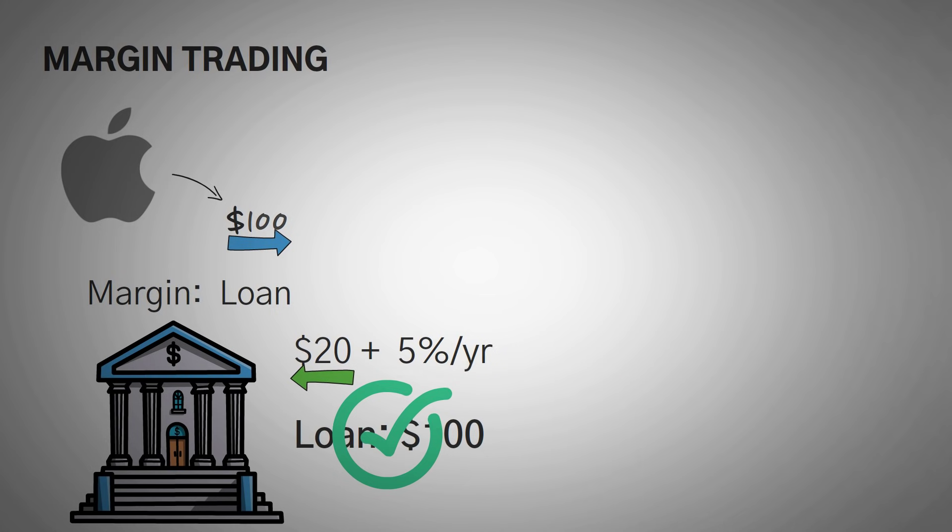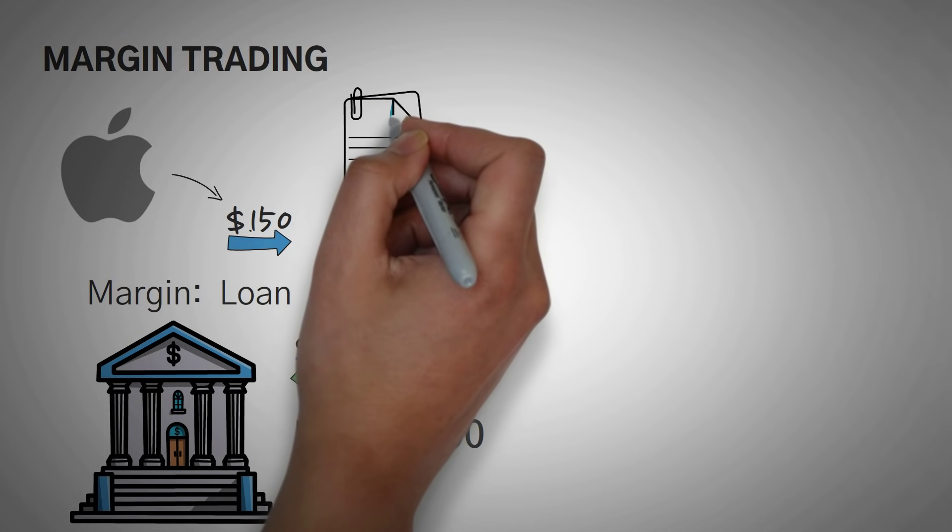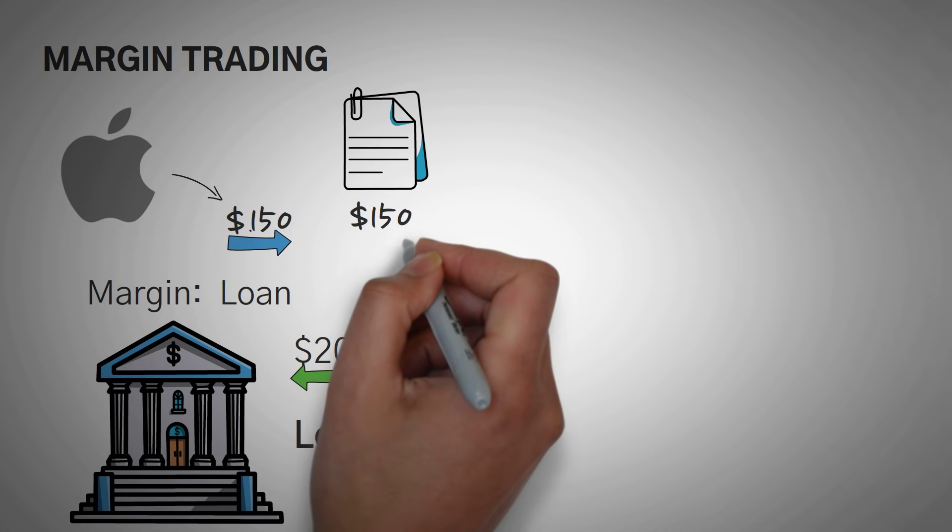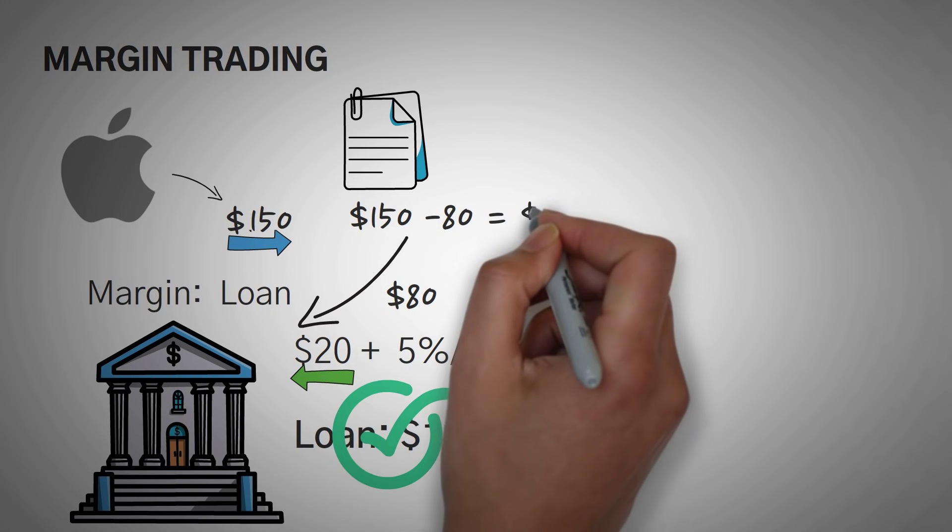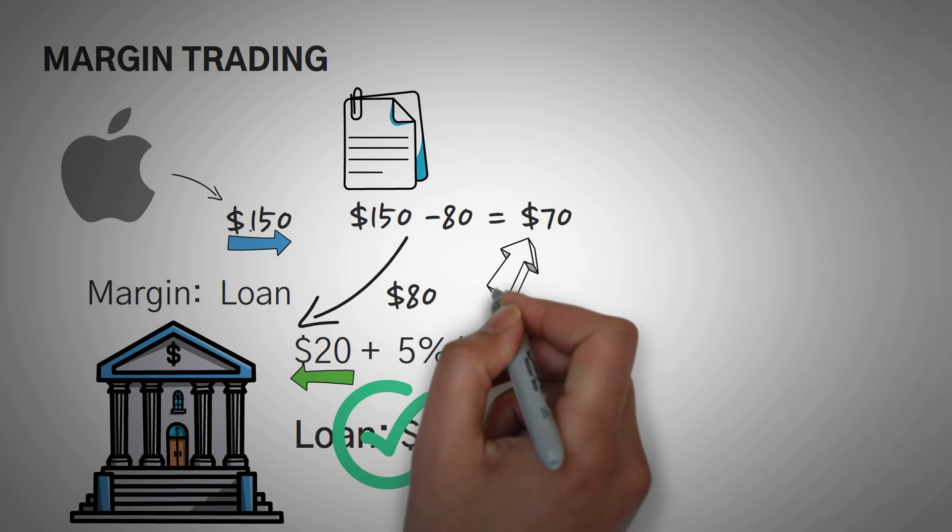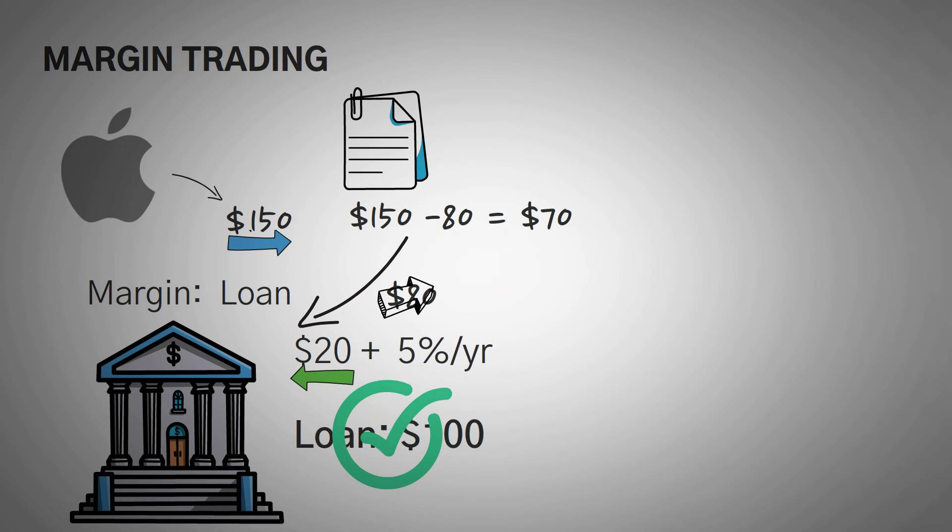The stock goes from $100 to $150. You have paper hands, so you decide to sell the stock and you get $150. You pay back $80 of your loan because the bank already had your original $20 as a down payment, and you keep the rest, which is a profit of $70.